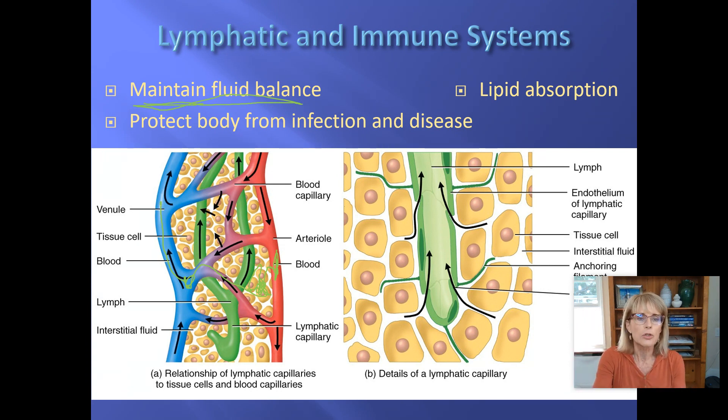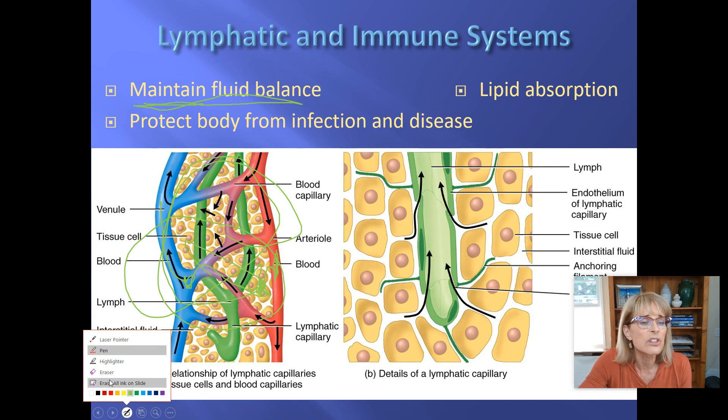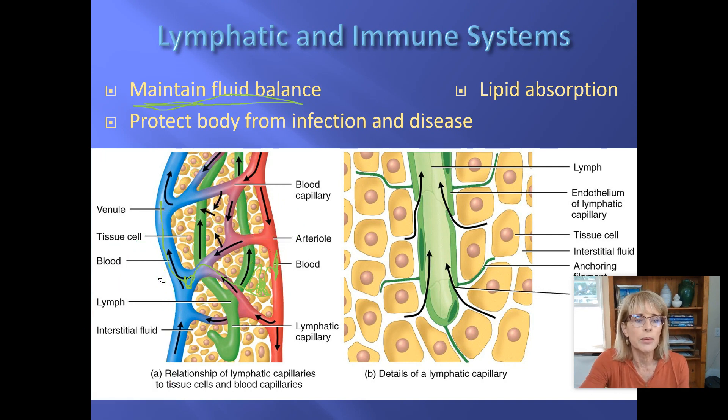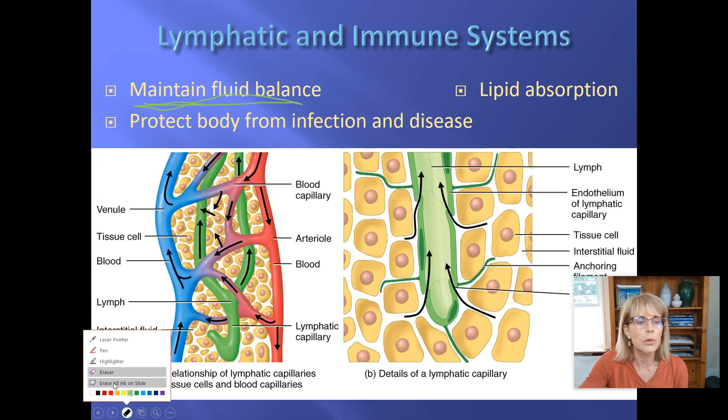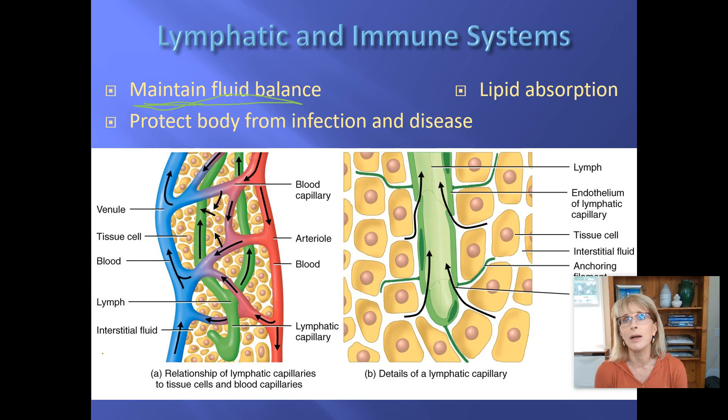So we need to regather that stuff, or else, like, for every time a tablespoon of blood travels through this thing called a capillary bed, about a drop of blood is going to end up being left behind. Well, if all those drops started accumulating, that would end up causing a problem. So we need the lymphatic system to help everything go back to the heart, and we call that maintaining fluid balance.